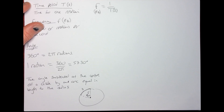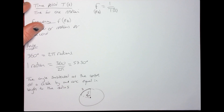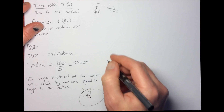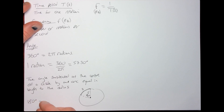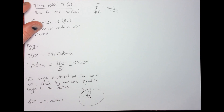'Subtended' just means the angle swept out or that the object moves through. So in radians: 360 degrees equals 2π radians, which means 180 degrees equals π radians, and so on.